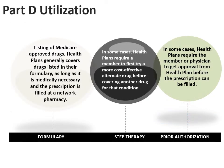Part D utilization focuses on providing drugs in each therapeutic class, called a formulary. Part D plans list their covered drugs — generic and brand — in their formulary, place them in tiers, and assign a co-payment for each tier. Formularies and preferred pharmacies differ from plan to plan. Step therapy is a process whereby plans may require a member to first try a more cost-effective alternative drug before covering a more expensive medication. Prior authorization requires the member or physician to get approval from the plan before a prescription can be filled.